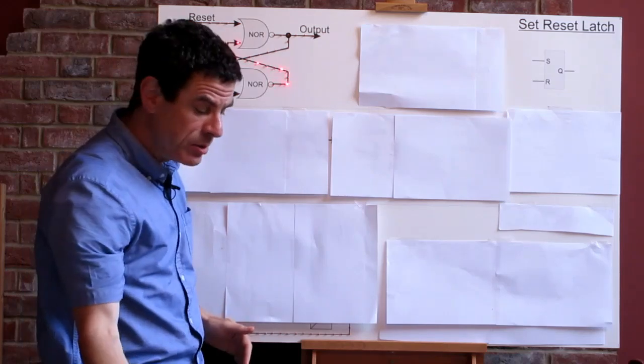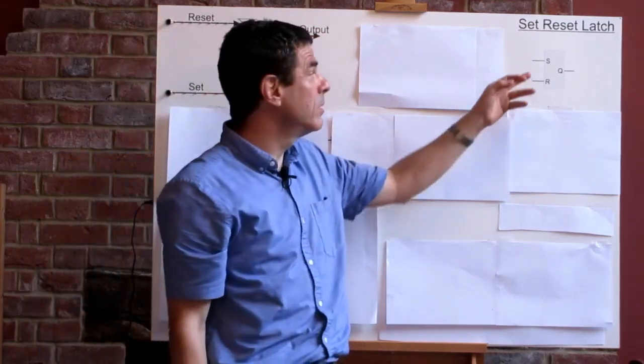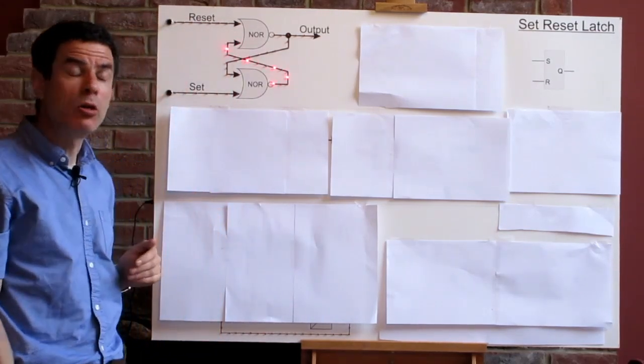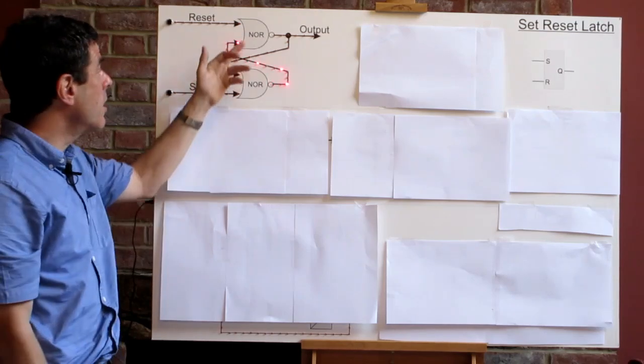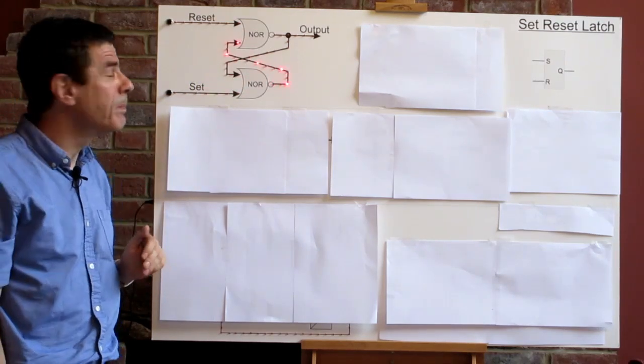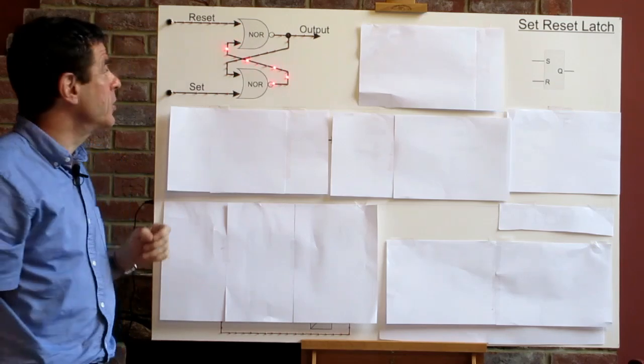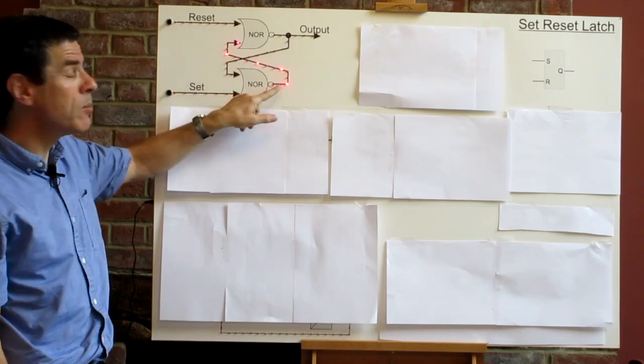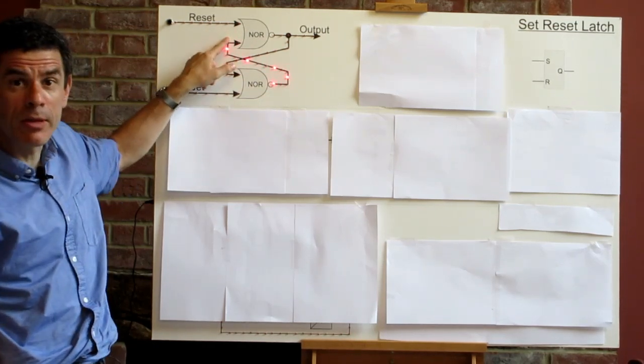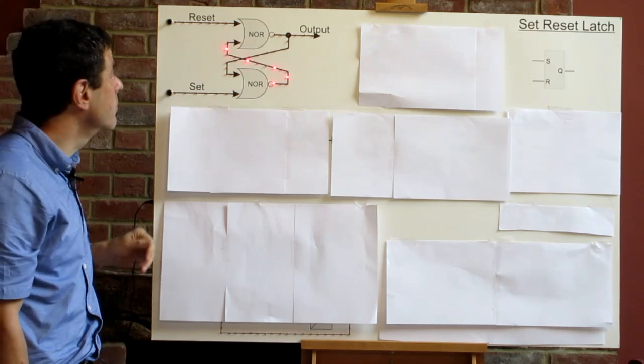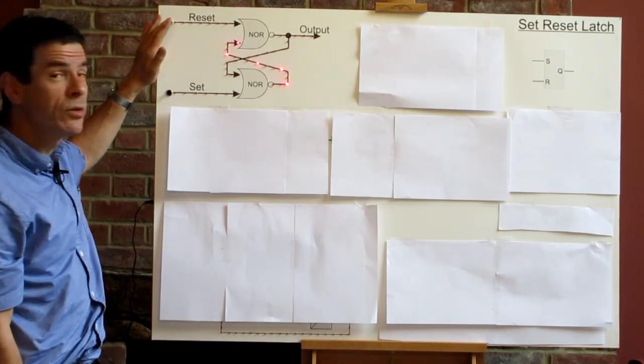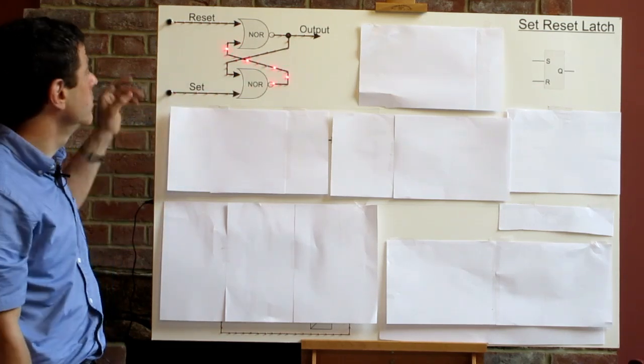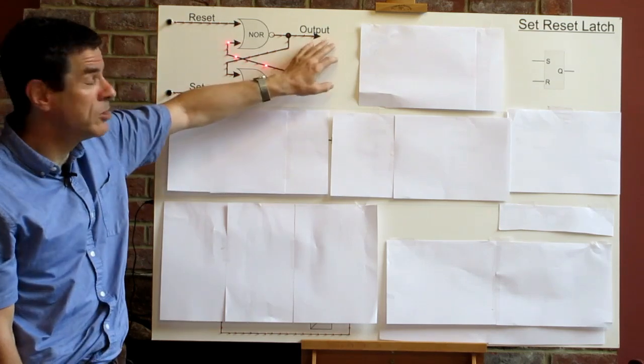So the simplest memory element is probably the set-reset latch which has a symbol which looks like that. You can actually create it using logic gates. So I've created one using two NOR gates here. And the standout design feature of this arrangement is the cross-coupling where the output of one of the gates is one of the inputs together, and vice versa. There are two inputs which I've labelled reset and set and the output. At the moment we have both inputs are zero and the output is zero.